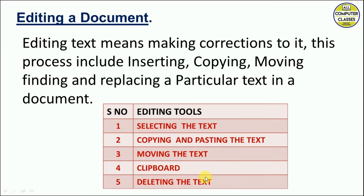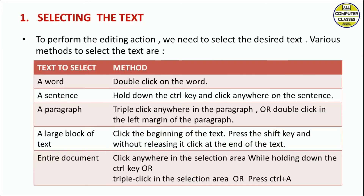To perform editing actions we need to select the desired text. We have various methods for selecting text. For a word, double-click on that word. For a sentence, hold down Ctrl and click anywhere on the sentence — the sentence up to the full stop will be selected. For a paragraph, triple-click anywhere in the paragraph, or double-click in the left margin of the paragraph.